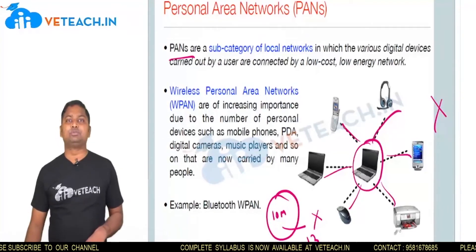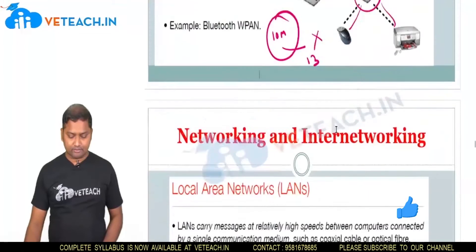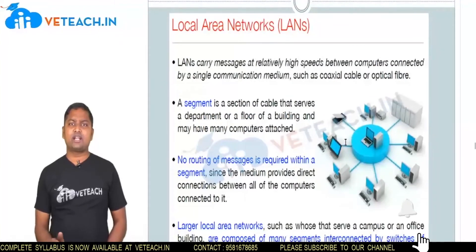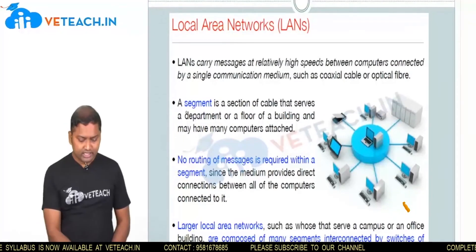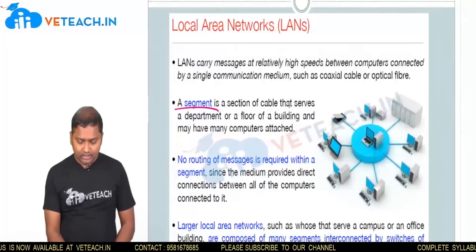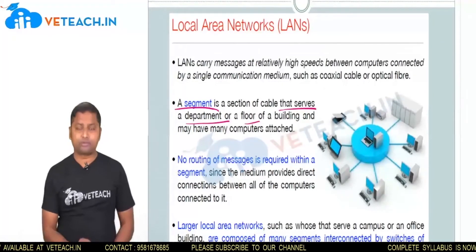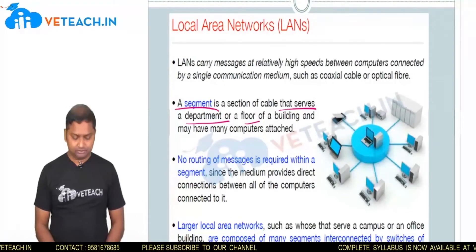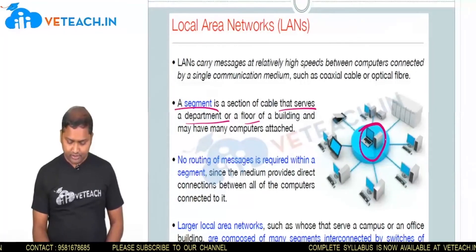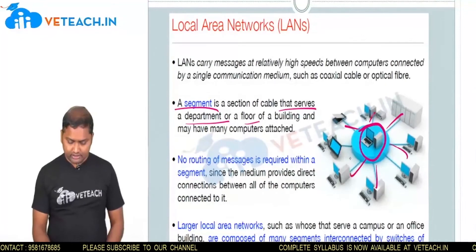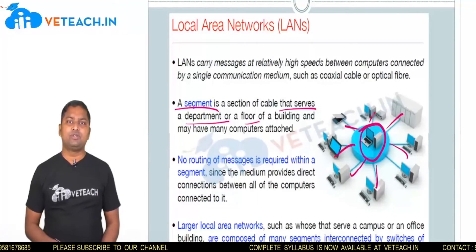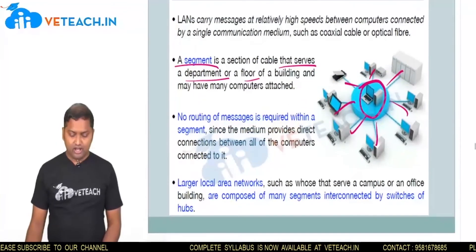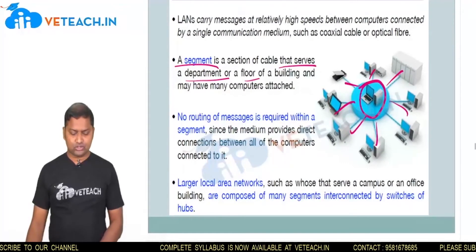If you want to improve range, you can go for another network — LAN, Local Area Network. Here we are dividing the total network into different segments. A segment serves a department or a floor — that means within a building you want to establish a connection. For example, in an apartment or college where you want to provide internet facility, you can use LAN.